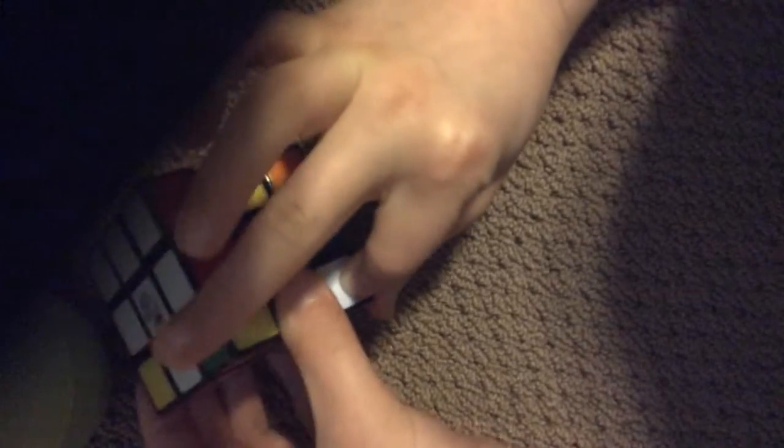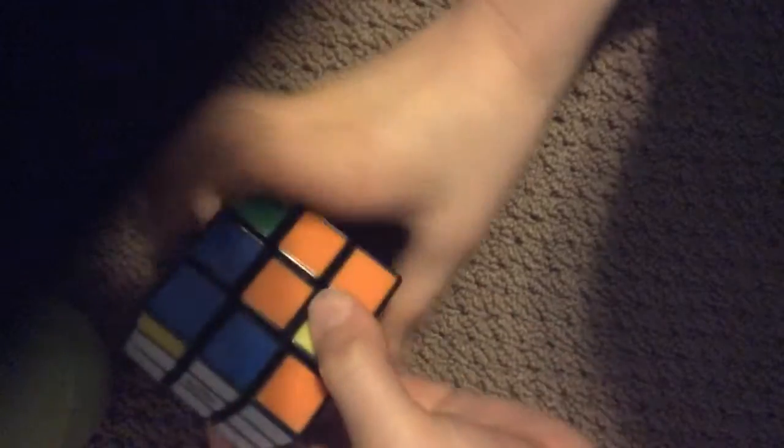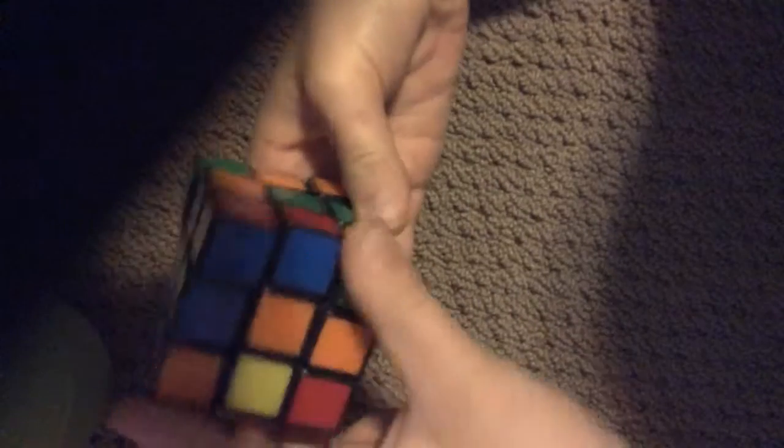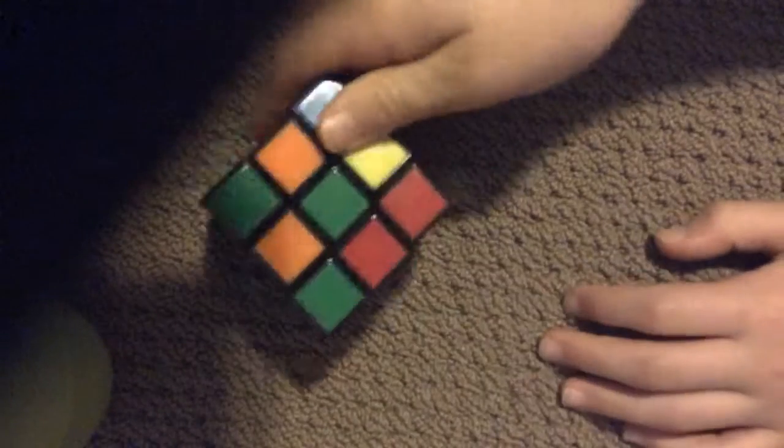Then you need to replace this piece with that piece. Now we just have one more to put back. Then you do the same thing. Then there, you solved the white side of the Rubik's Cube.